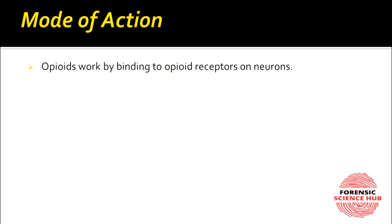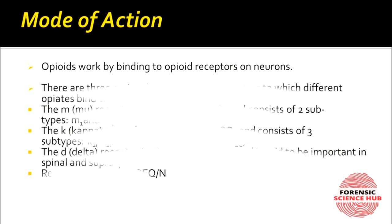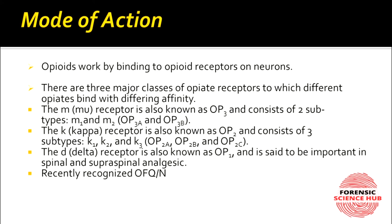Regarding the mode of action, opioids work by binding to opioid receptors present on neurons distributed throughout the nervous system and the immune system. There are four main receptors onto which opioids attach: mu, kappa, delta, and a newly recognized OFQ/N receptor.